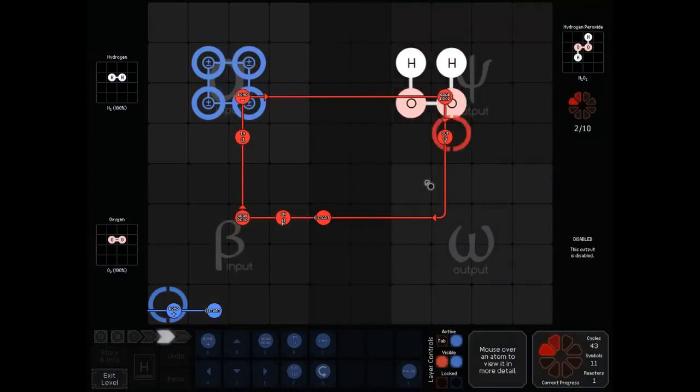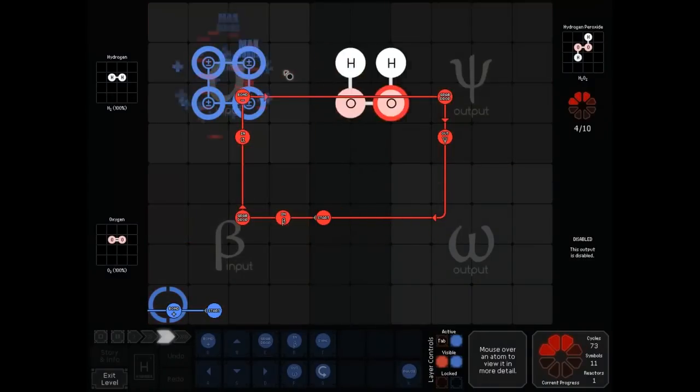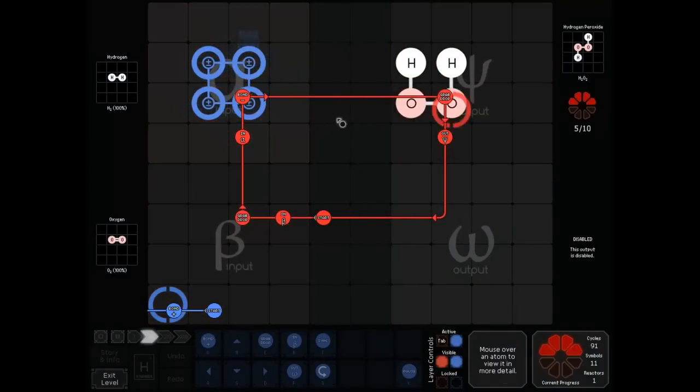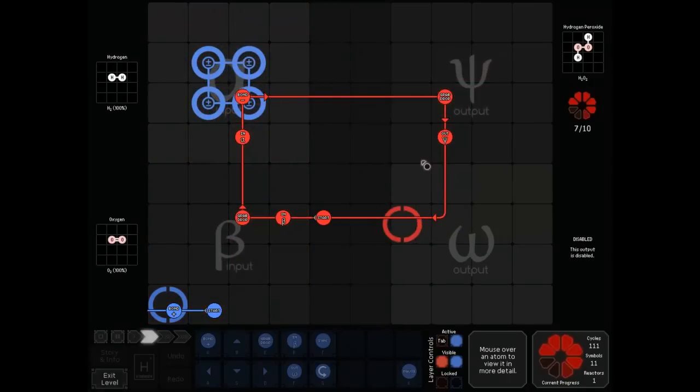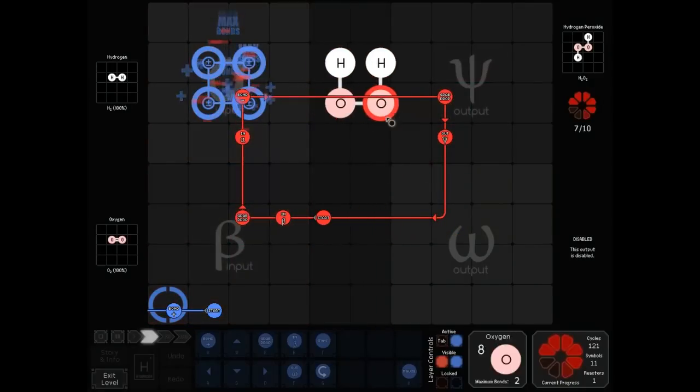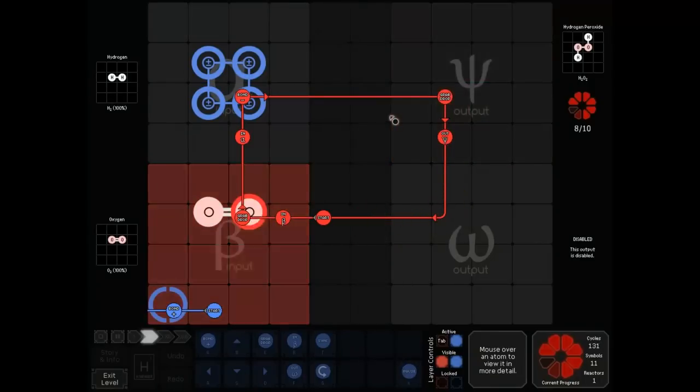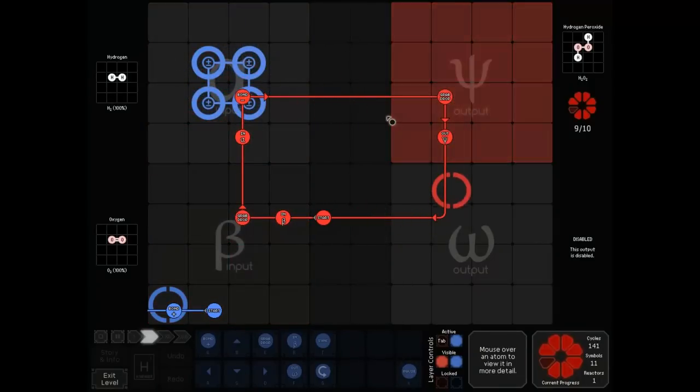That's, so that's how bonder priority works. If you want bonds to form a certain way, you kind of have to play around with the location of the bonders a little bit. But I hope that all makes sense, and I'll see you guys next challenge or tutorial video. Bye-bye.